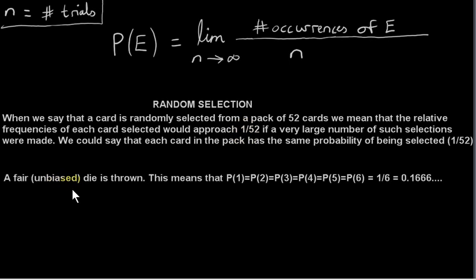Now let's look at an experiment consisting of the throwing of a die. A fair, that is unbiased, die is thrown. This means that the probabilities of getting any of the numbers 1 to 6 are the same. Indeed, each probability is equal to 1 over 6, which is 0.166 recurring.